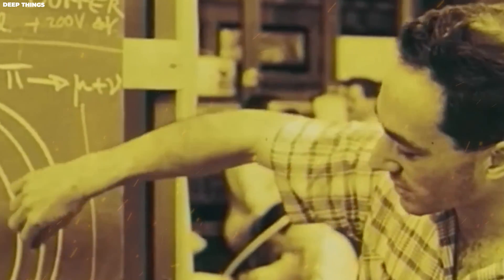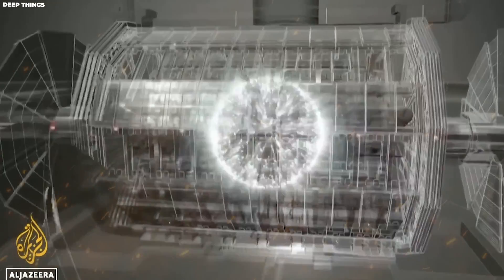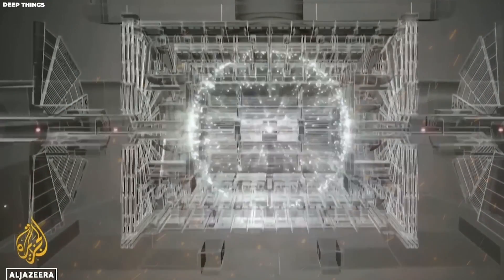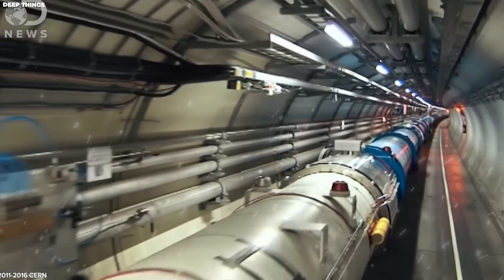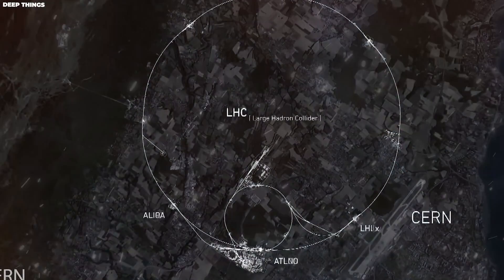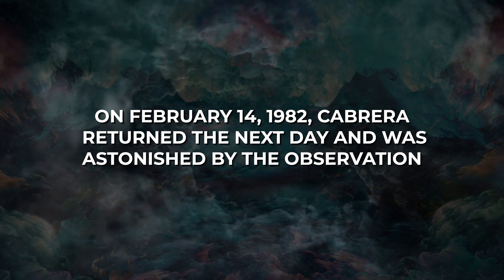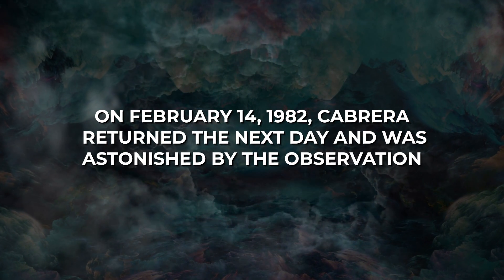Blas Cabrera conducted an experiment in 1982 to detect magnetic monopoles in the universe. His setup consisted of a coil with eight loops, and his reasoning was that if a magnetic monopole passed through the coil, it would induce a specific signal due to electric induction. On February 14, 1982, Cabrera returned the next day and was astonished by the observation.